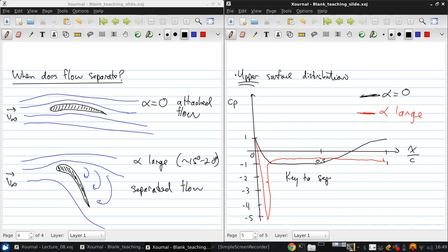The key to separation is the presence of a strong adverse pressure gradient, specifically in the boundary layer. If the streamwise direction is S, we mean dpds is much larger than zero.